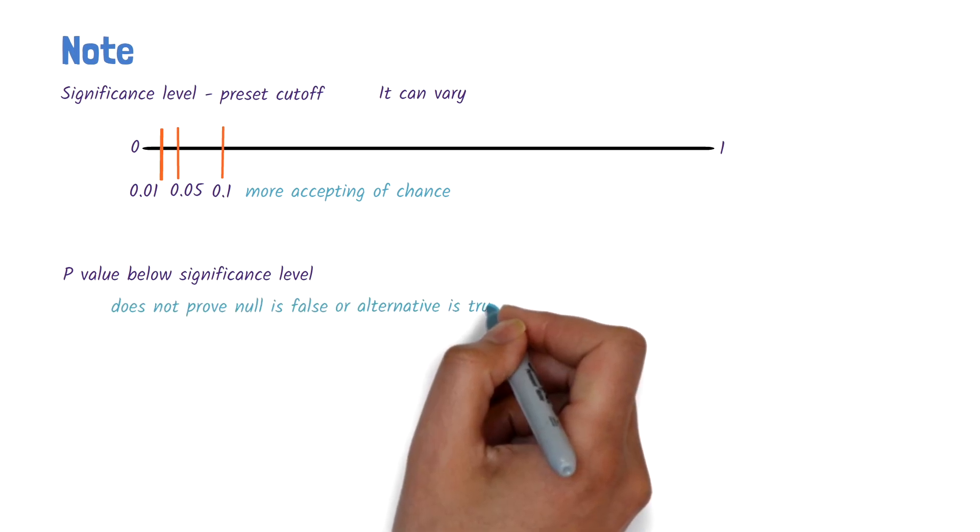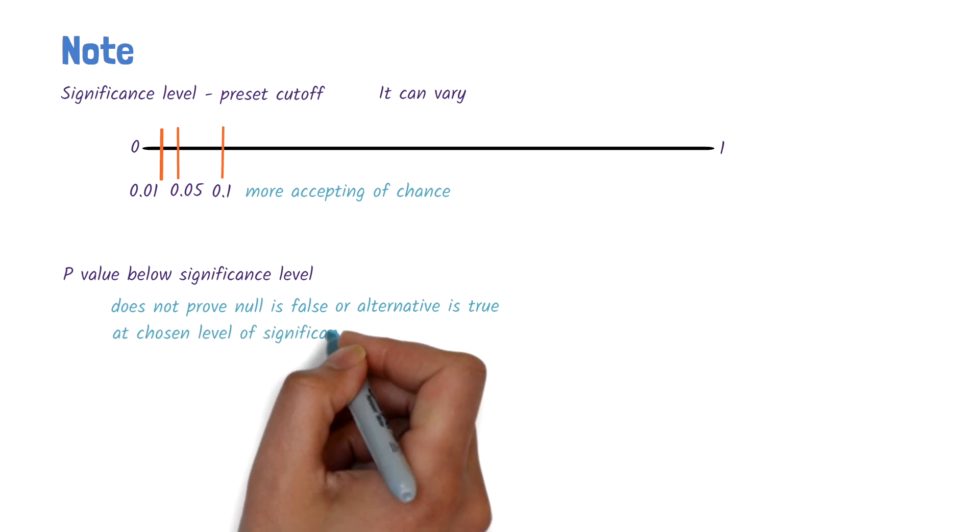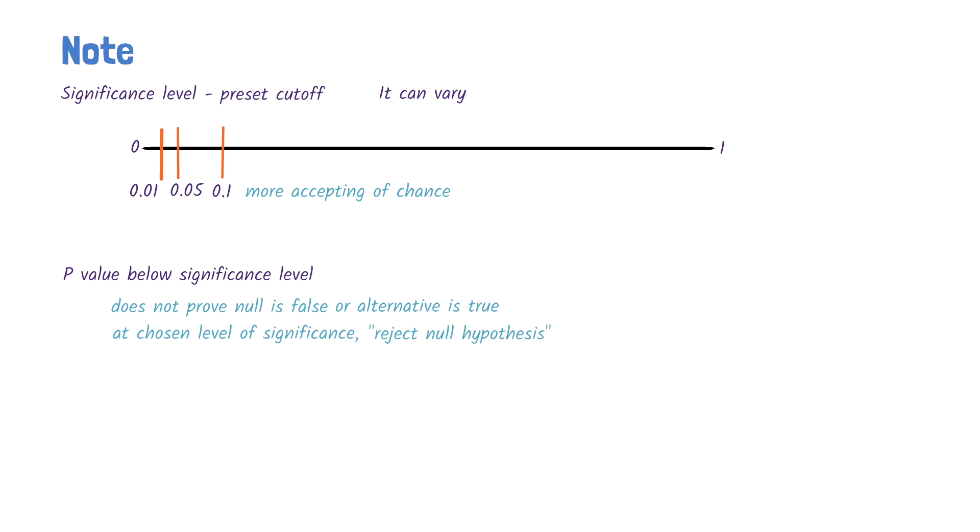A p-value below the significance level does not prove that the null hypothesis is false or that the alternative hypothesis is true. What we can say is that at the chosen level of significance, we can reject the null hypothesis. Because tests rely on sample data and probabilities, we can't be certain, only reasonably confident in our conclusions.